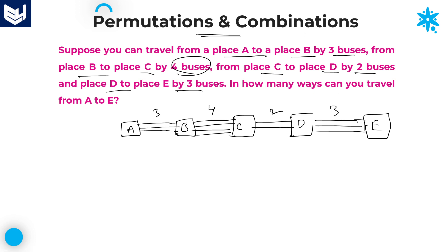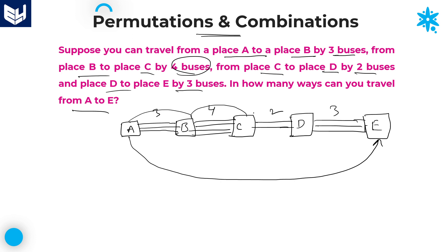In how many ways can you travel from A to E? If you want to travel from A to E, you need to go from A to B, after that B to C, after that C to D, and then D to E. There is no direct bus from A to E.